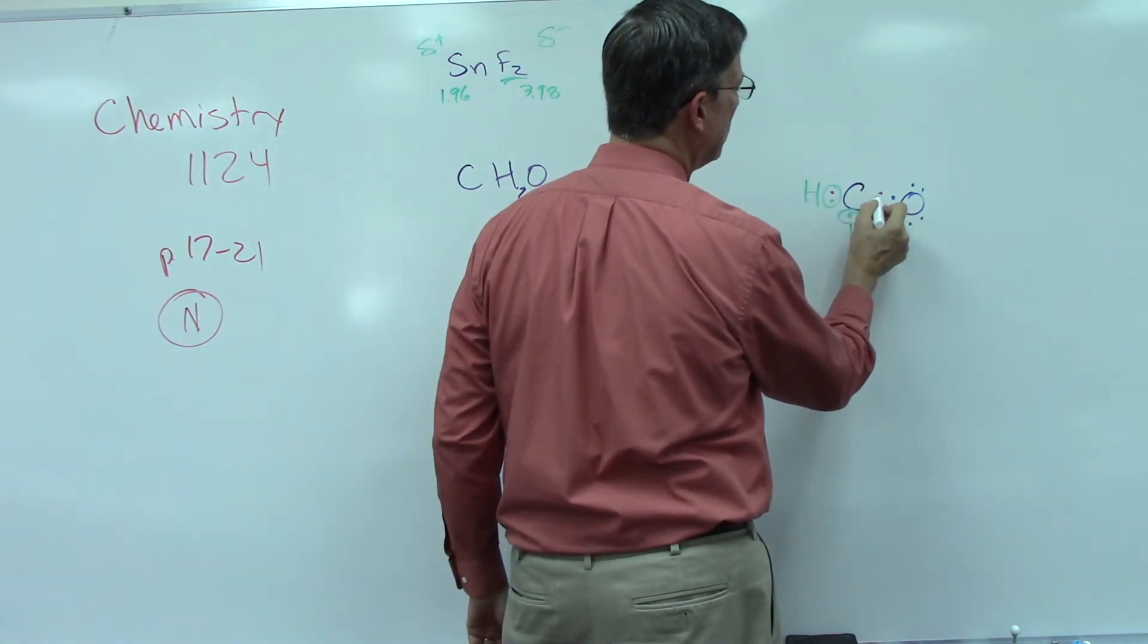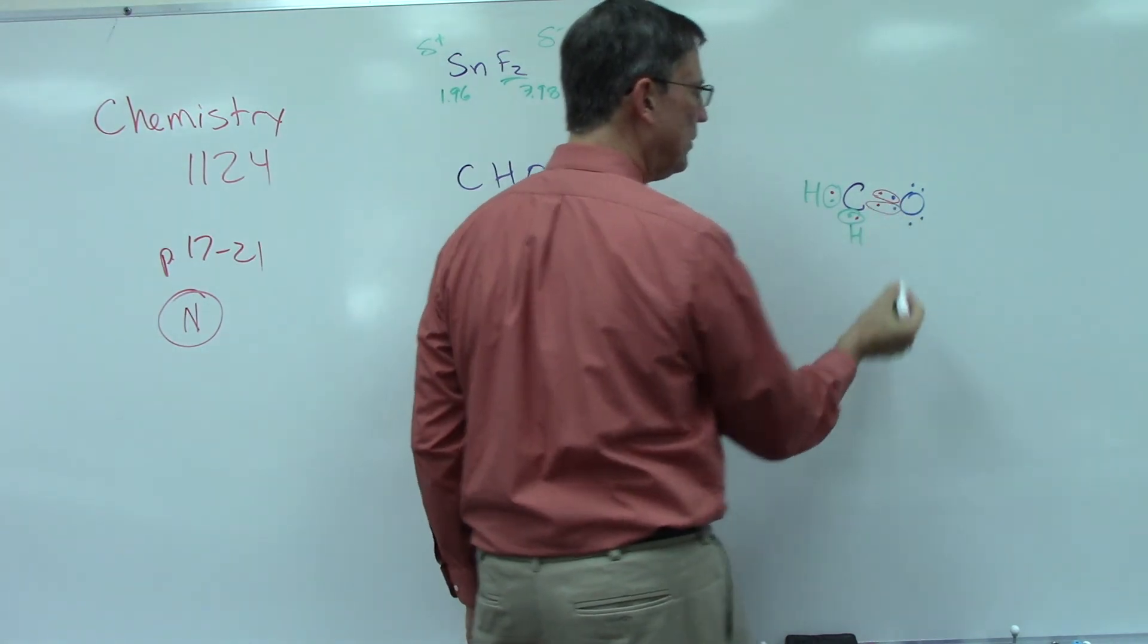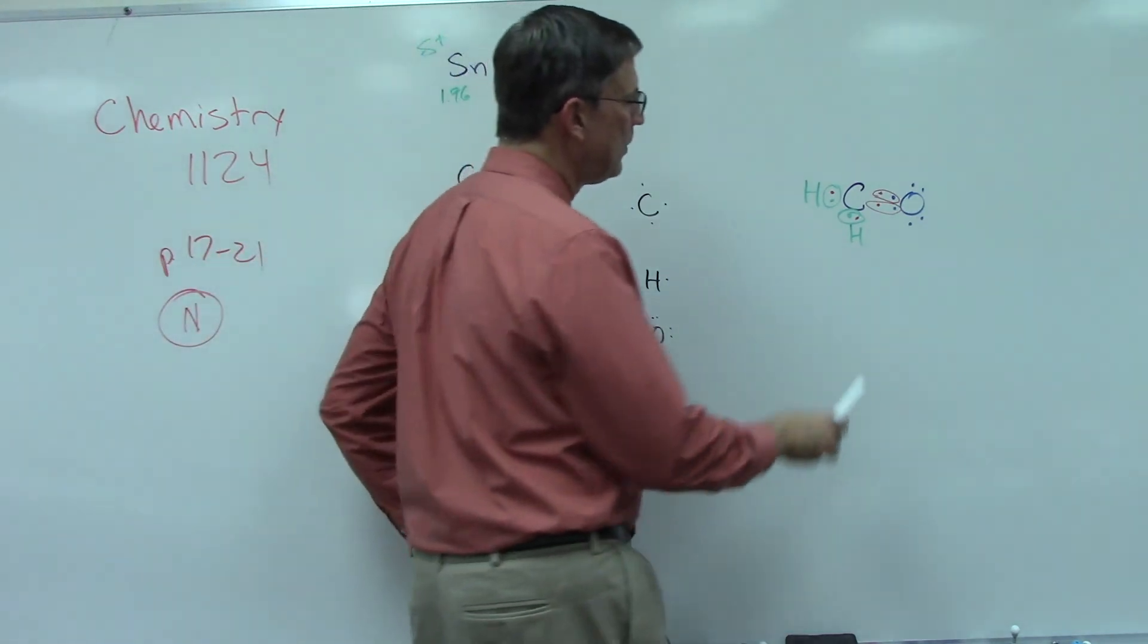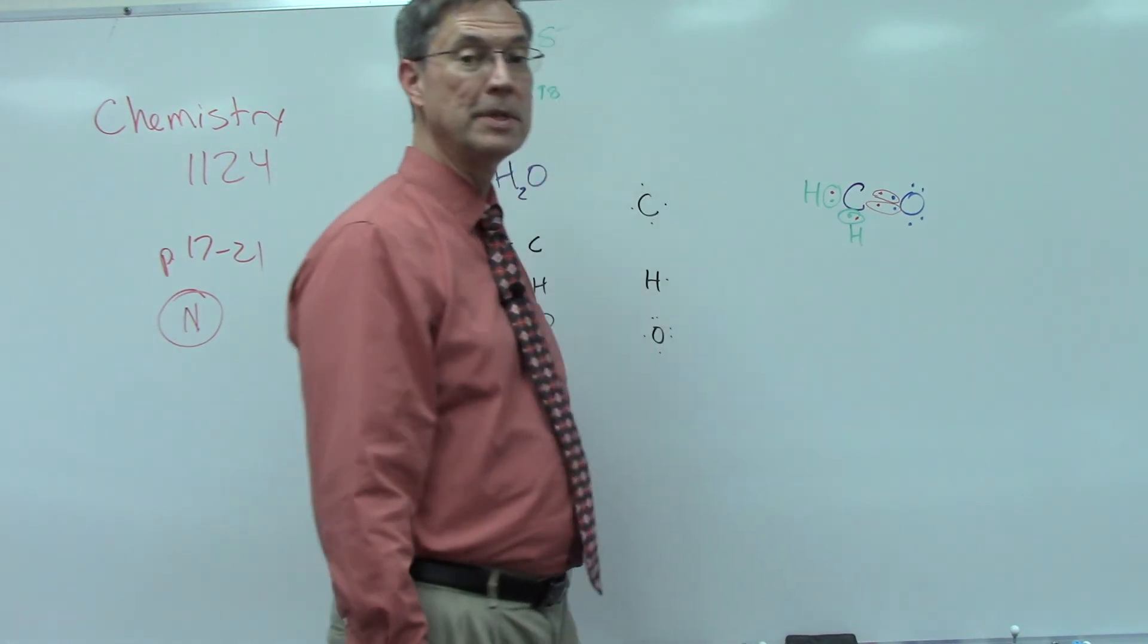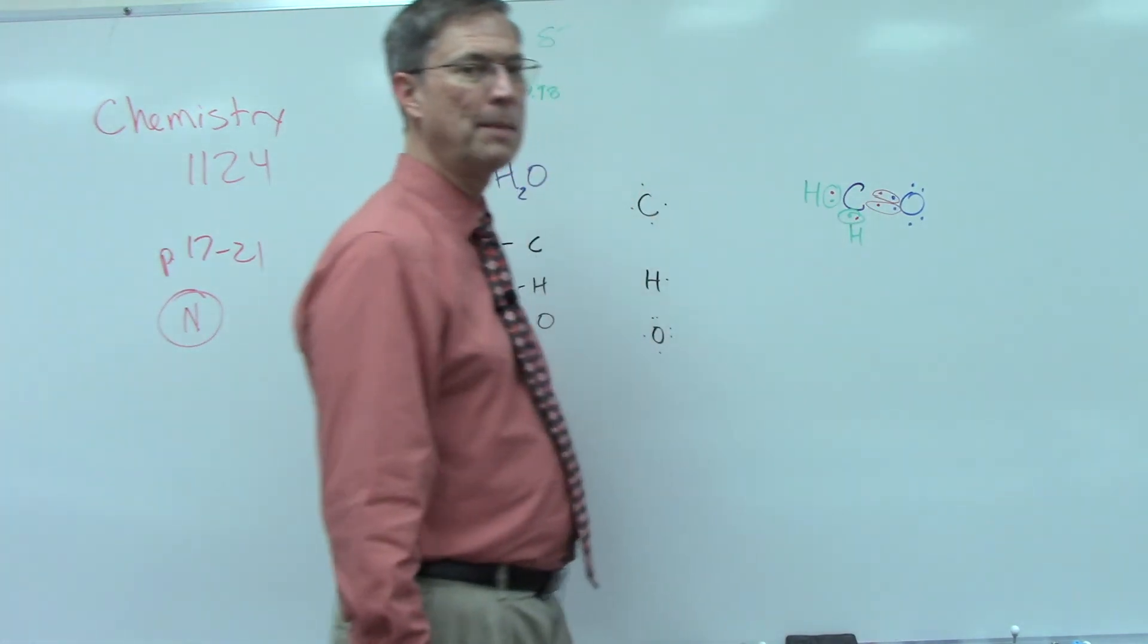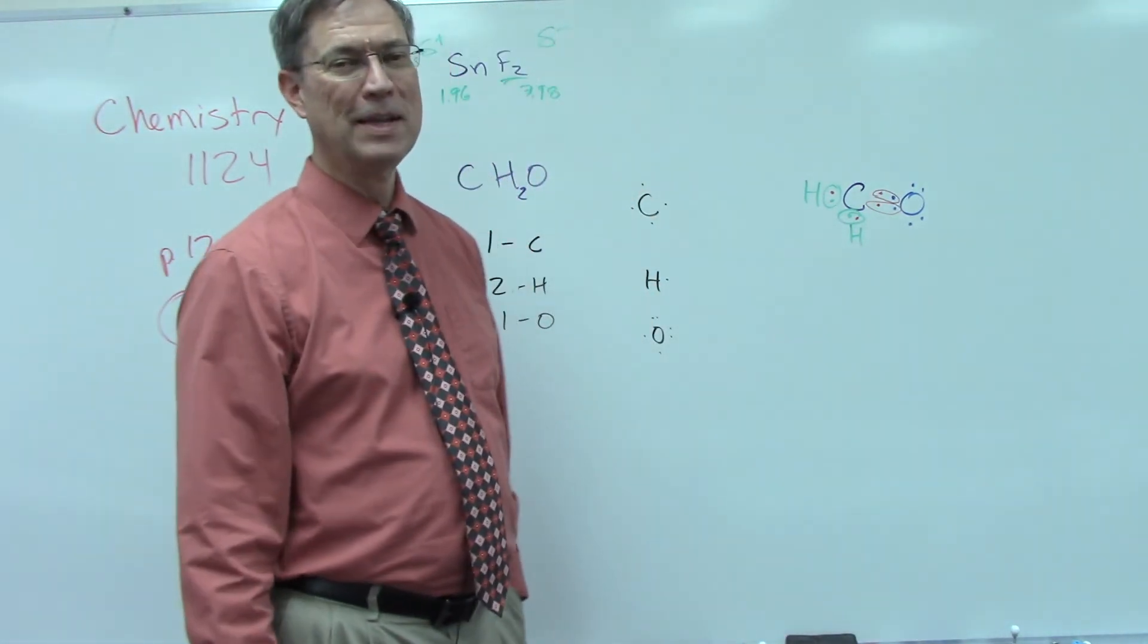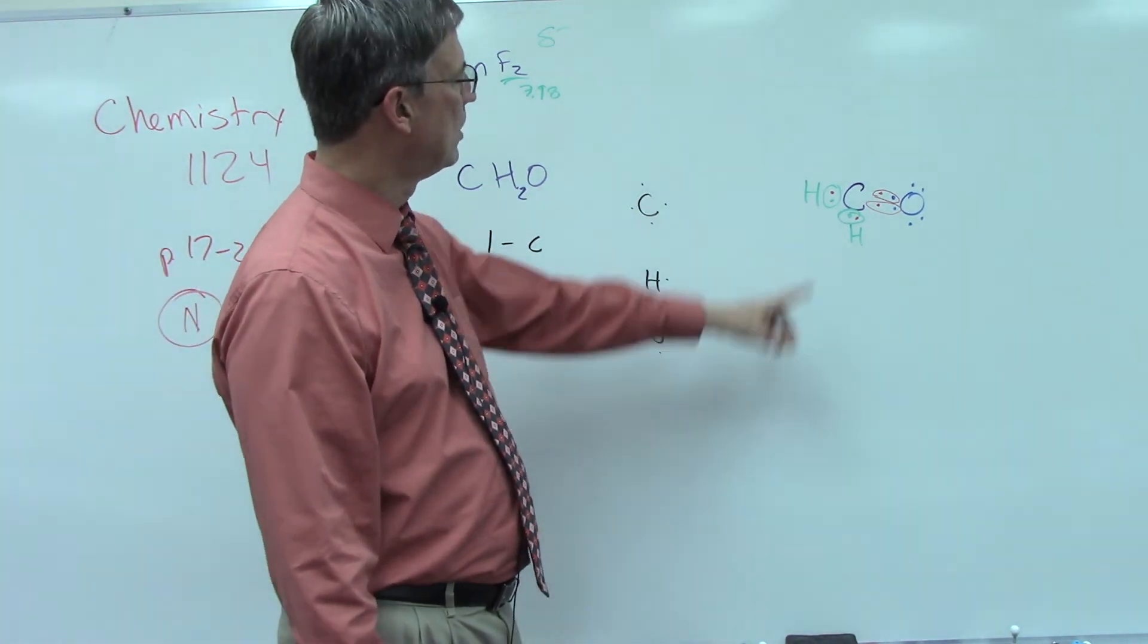Notice we have a pair of shared electrons and a pair of shared electrons. Let's count how many we have around carbon now: one, two, three, four, five, six, seven, eight. Carbon's happy. Let's count how many electrons we have around oxygen: one, two, three, four, five, six, seven, eight. Oxygen is happy. Hydrogen only needs the two to be happy, so we have all the electrons. How many total do we have? One, two, three, four, five, six, seven, eight, nine, ten—we have twelve electrons total.